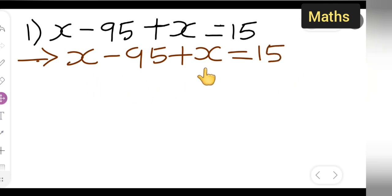You can take down x plus x, which is nothing but 2x minus 95 equals 15.